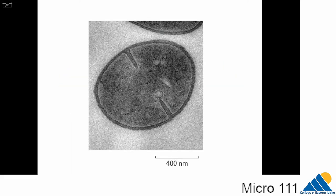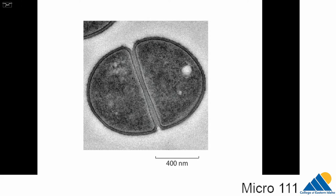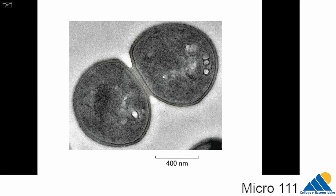Cocci, such as Staphylococcus aureus, do not elongate their cell walls before septation. Spherical cells expand their walls during septation. Furrows appear in the cell envelope all around the cell equator as a new cell wall grows inward. Two new envelope partitions are completed, the two daughter cells peel apart, and the facing halves of each cell contain entirely new cell wall.